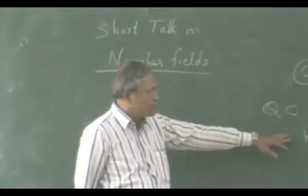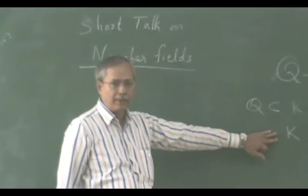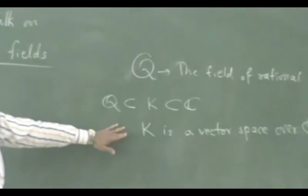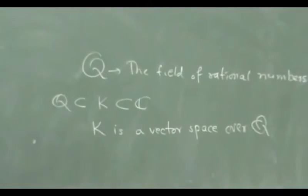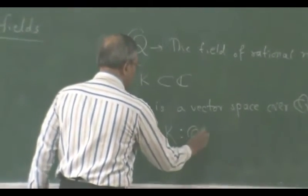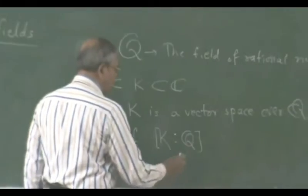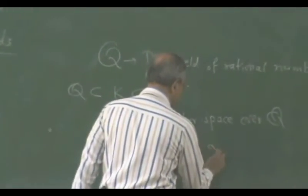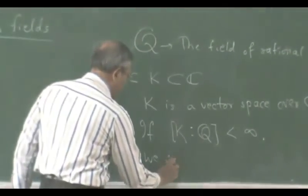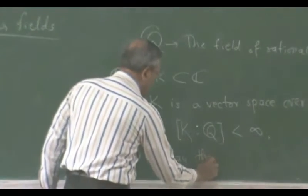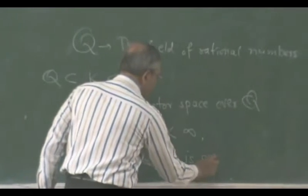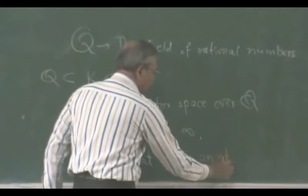Now, if the dimension of this field K is finite, then we say that K is an algebraic number field. So, if the dimension of K over Q as a vector space is finite, we say that K is an algebraic number field.